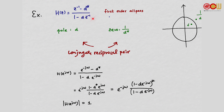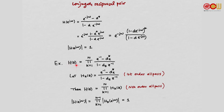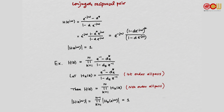Because it has one pole and one zero, we call it a first-order all-pass. More generally, if H(z) is a product of n first-order all-pass terms, then the magnitude of H is the product of the magnitudes of each H_k, which equals 1. Such an H is an nth-order all-pass with n poles and n zeros.